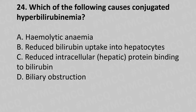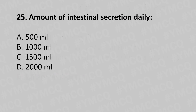Now let's move to question number 24. Which of the following causes conjugated hyperbilirubinemia? Option A: Hemolytic anemia. Option B: Reduced bilirubin uptake into hepatocytes. Option C: Reduced intracellular hepatic protein binding. Option D: Biliary obstruction. And the answer is Option D: Biliary obstruction.